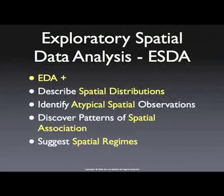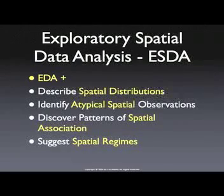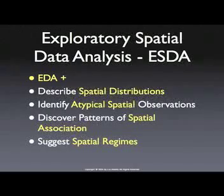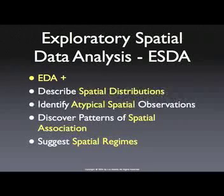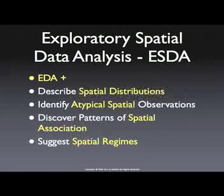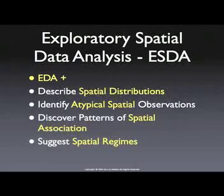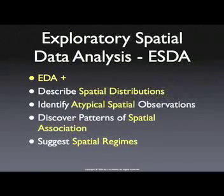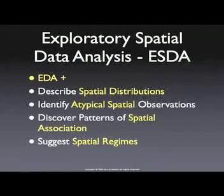We would like to identify atypical distributions — we call those outliers. What we'll see later is that the concept of an outlier in space is not necessarily the same as a traditional concept. A spatial outlier is a location that is very different from its neighbors, whereas a traditional outlier is simply a very high value, irrespective of the neighbors or where it is located. Similarly, patterns of spatial association or autocorrelation have to do with identifying the extent to which things are more similar in similar locations — that's the concept of spatial autocorrelation.